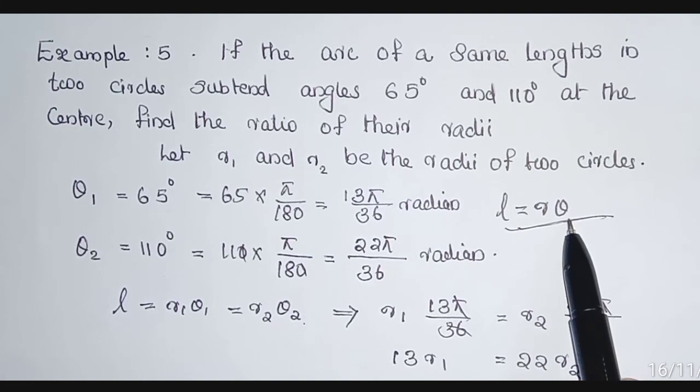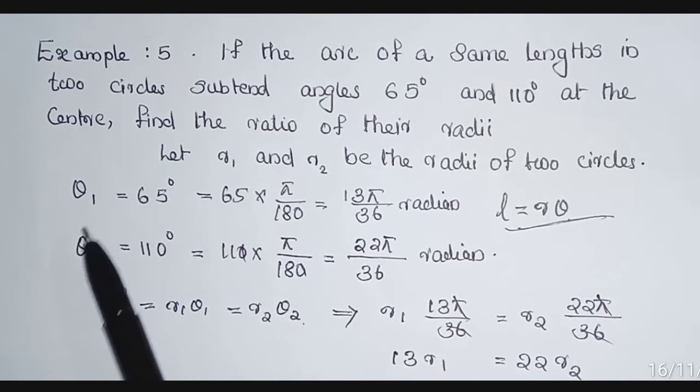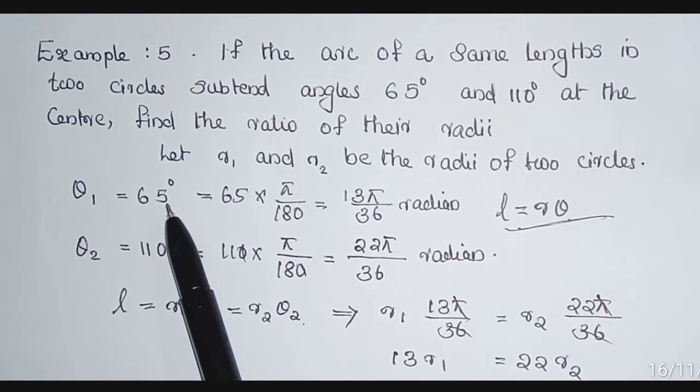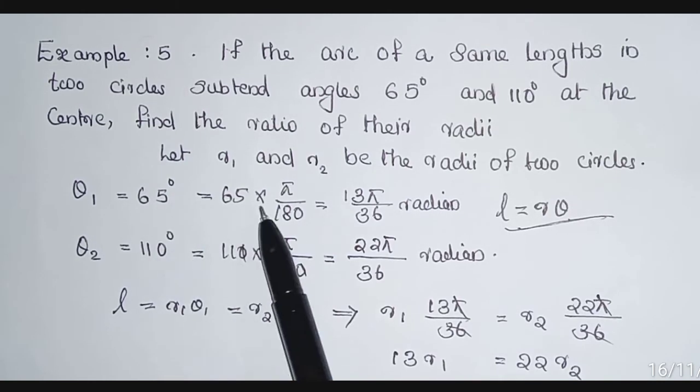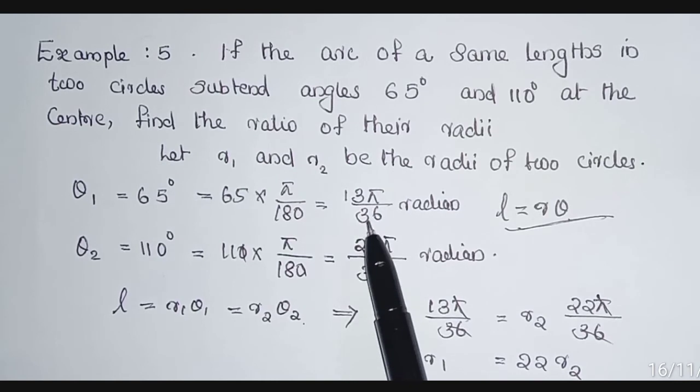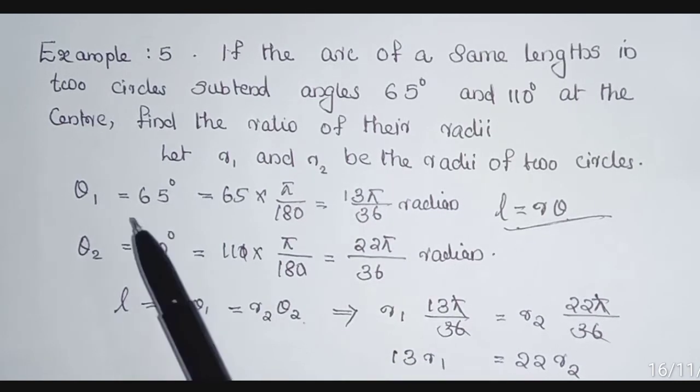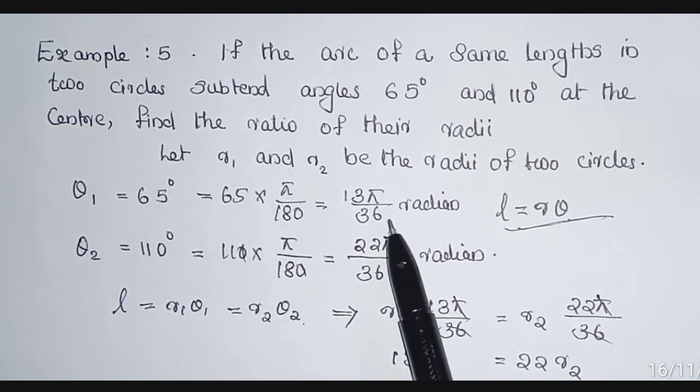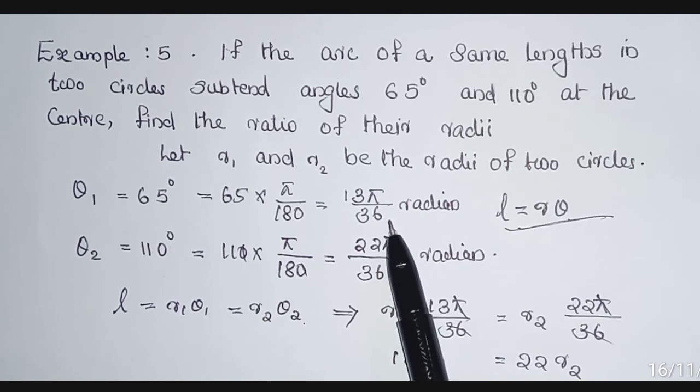But in this equation, θ is in radians. But here, given that θ is in degrees. So first we want to convert that angle into radians. 65 × π/180. We get 13π/36 radians. That means 65° = 13π/36 radians.